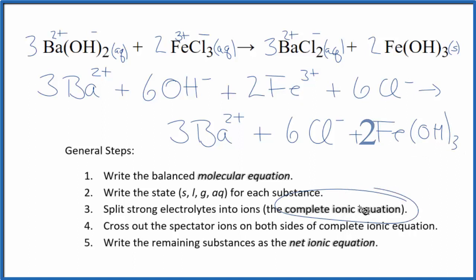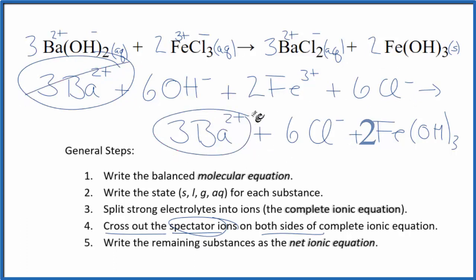Now this is the complete ionic equation. Now we're going to cross out spectator ions, which appear on both sides of the complete ionic equation. So I can see in the reactants here, I have three barium ions. And then here in the products, I have three barium ions. We cross those out.